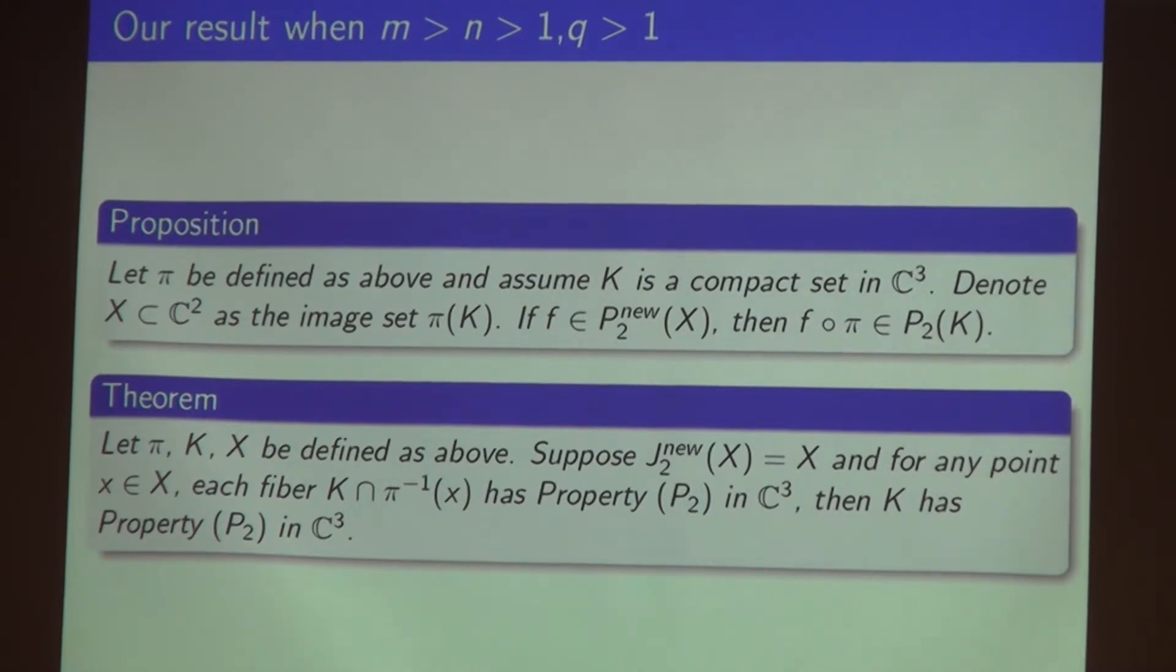Our theorem is as follows. Let pi, K, X be defined as above and assume the Choquet boundary J_{2,nu}(X) is X itself. That's analogous to saying X has a kind of property P_{2,nu}. For any point X in the image set pi(K), if you still assume each fiber has property P_2 in C³, then the original compact set K has property P_2 in C³.